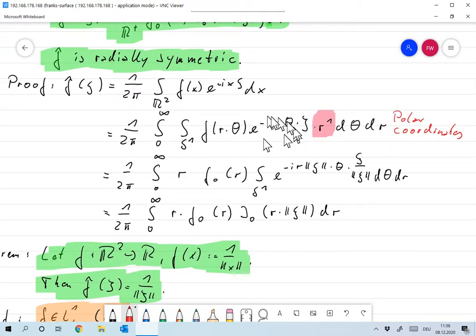Okay, so let's plug everything in. F of R times theta is F0 of R. We assumed that everything was, that F was rotationally symmetric. So we have that R over here, we have an F0 of R, and now the rest integral over S1, E to the minus IR norm of psi times theta times xi over norm of psi d theta dr.